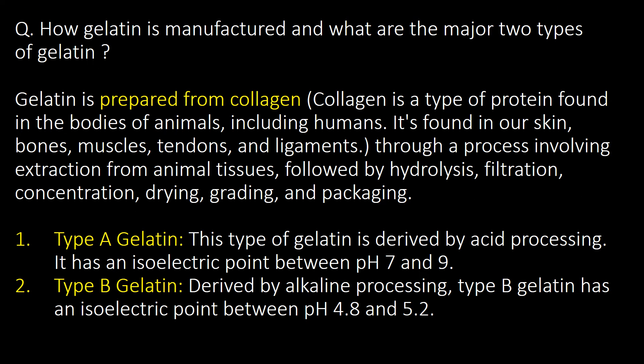How is gelatin manufactured and what are the two major types of gelatin? Gelatin is prepared from collagen, a type of protein found in the bodies of animals including humans, through a process involving extraction from animal tissues followed by hydrolysis, filtration, concentration, drying, grading, and packaging. There are two types: Type A gelatin, derived by acid processing, and Type B gelatin, derived by alkaline processing.